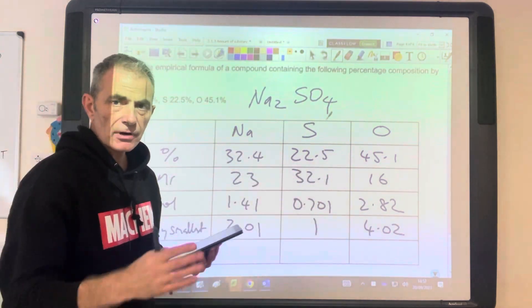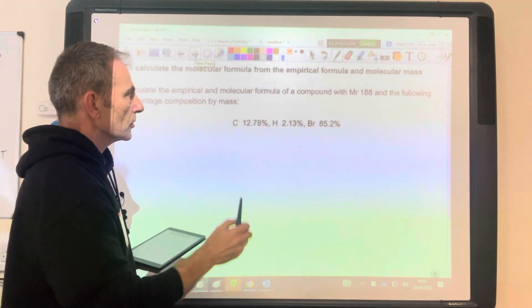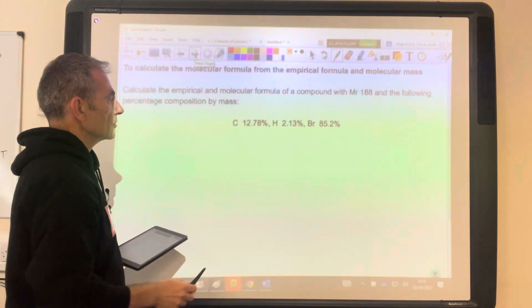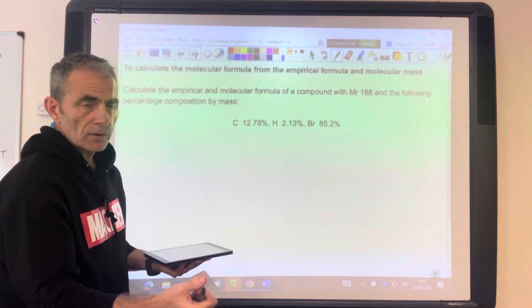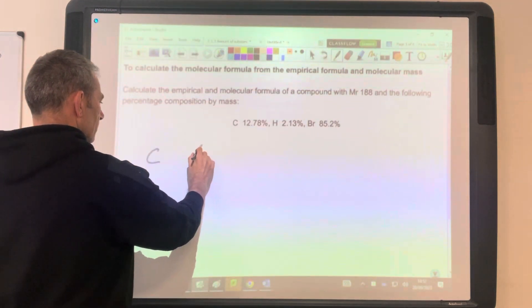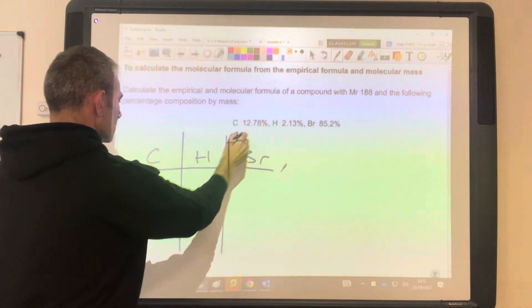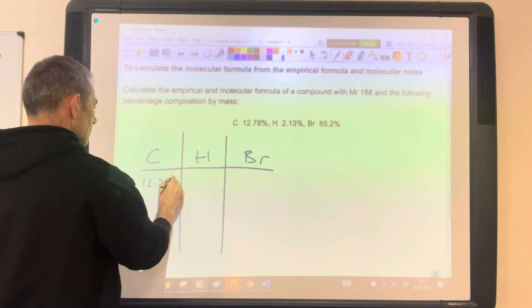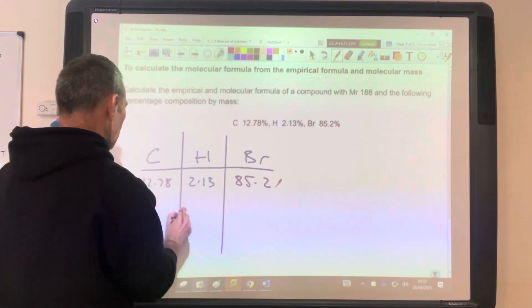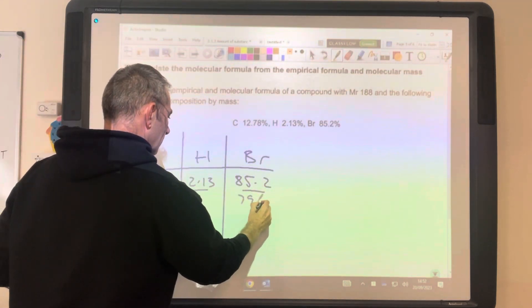So percentages, grams, same method. Right, so the last example, we're going to go from the empirical formula to the molecular formula. So the first part of the question, empirical formula is just what we've already done. I've lost the grid now. Hopefully we don't need it. So I'll just put a little table sort of here, C H Br, just drop some lines down. So the first thing I'm going to do is put the percentages in, 12.78, 2.13, 85.2. Dividing by the MR, so we've got 12, 1, 79.9.